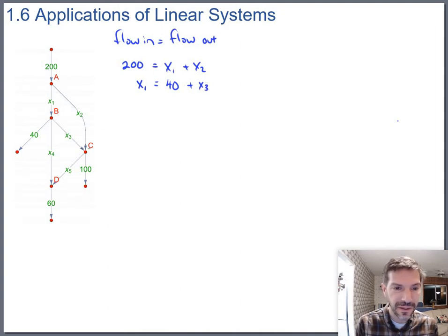As you know, it's C, flow in is x2 and x3. And the flow out is x5 plus 100.